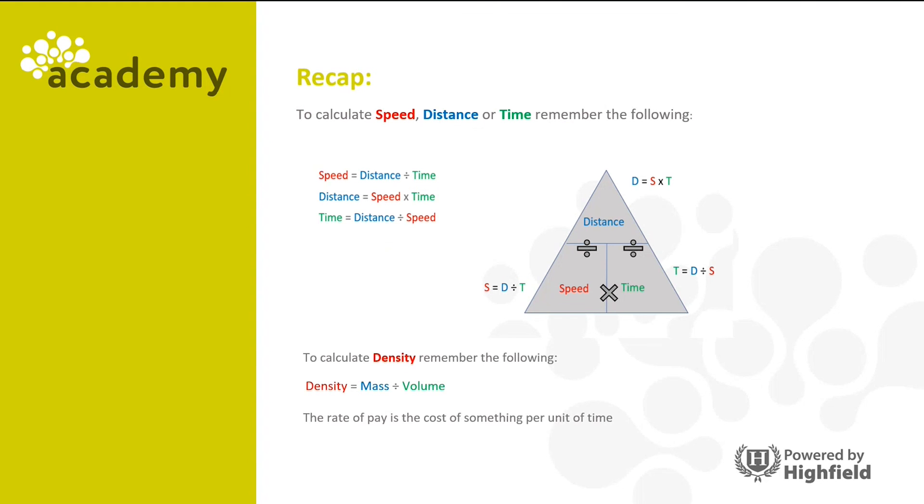Let's recap now. To calculate speed, distance and time, remember the following: speed equals distance divided by time, distance equals speed times time, time equals distance divided by speed. To calculate density, remember the following: density equals mass divided by volume. And finally, the rate of pay is the cost of something per unit of time.